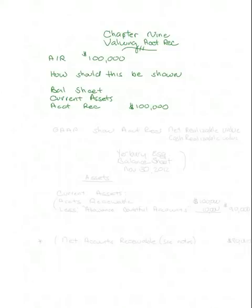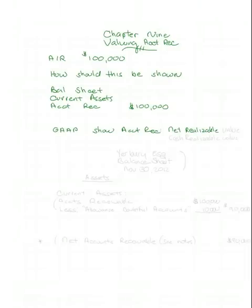What we want to be careful to do is to not show the accounts receivable for more than they would be worth. Generally Accepted Accounting Principles, known as GAAP, require that you show the accounts receivable at a term known by one of two names: either net realizable value or cash realizable value.